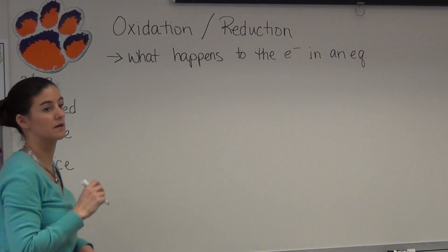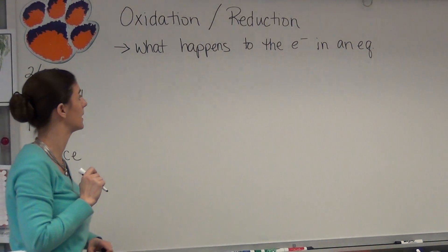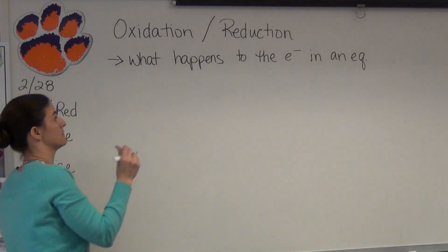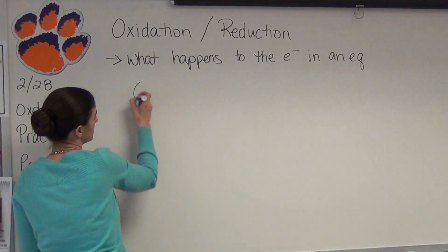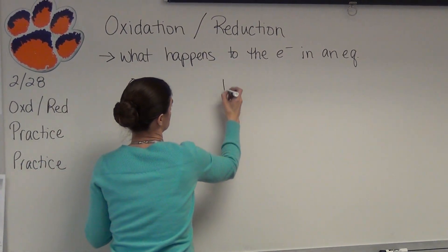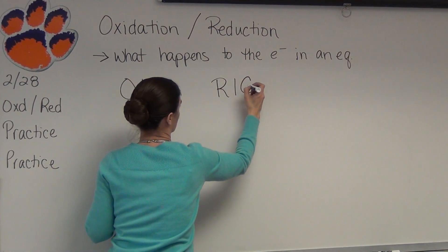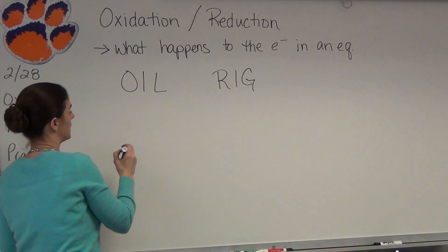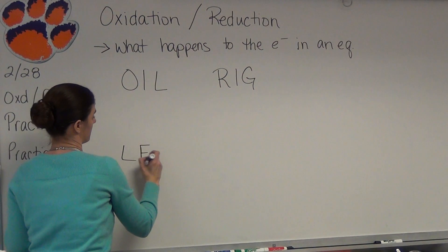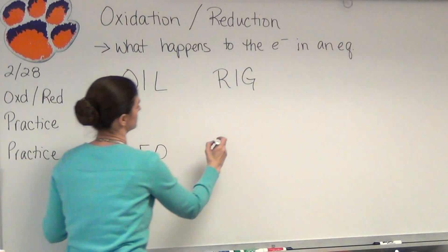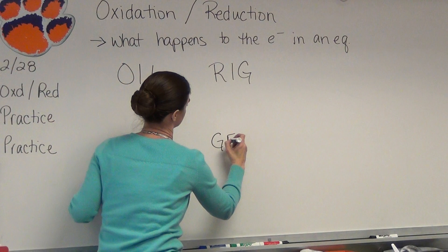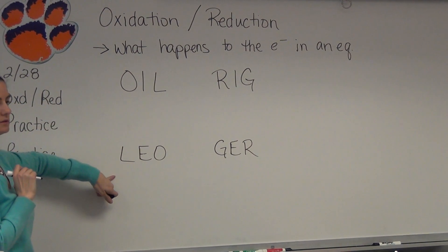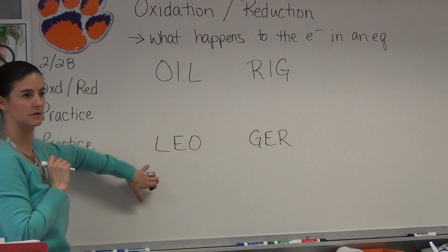I'm going to go through some steps of what you're going to do, but before we go through the steps, I'm going to give you two mnemonic devices. One is OIL RIG. The second is LEO the lion goes GRR.